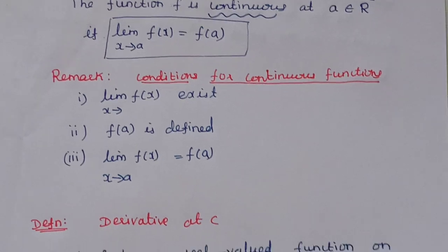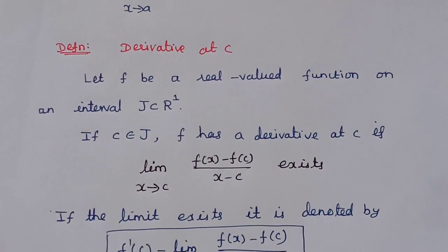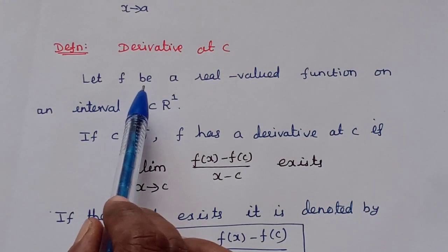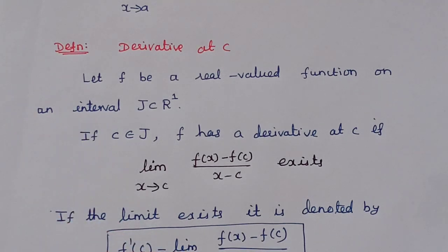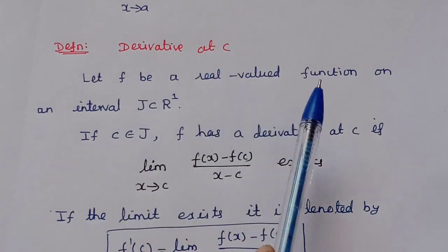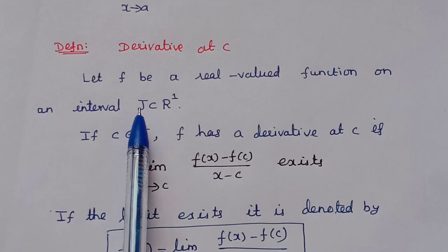Now we have the Unit 4 definition: the derivative at the point c. Now we need f to be a real-valued function on an interval J, which is a subset of R1. R1 is the metric space — the metric space on the real line. Let f be a real-valued function on an interval J, a subset of R1.